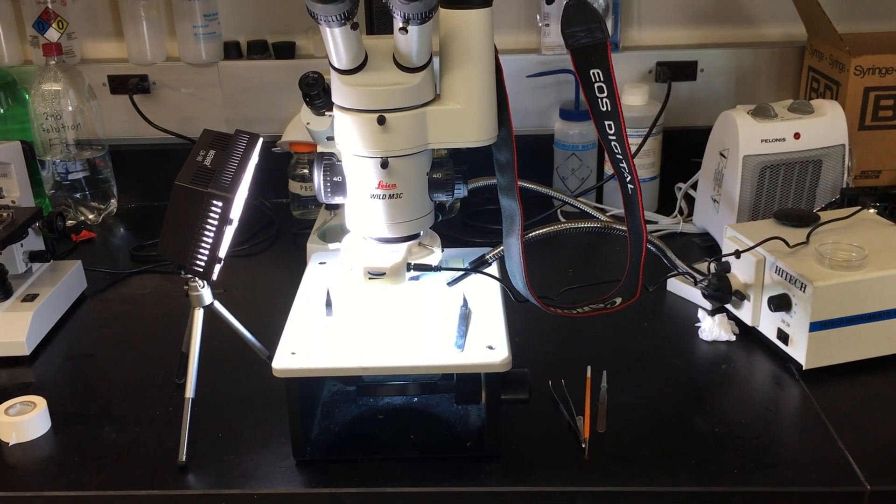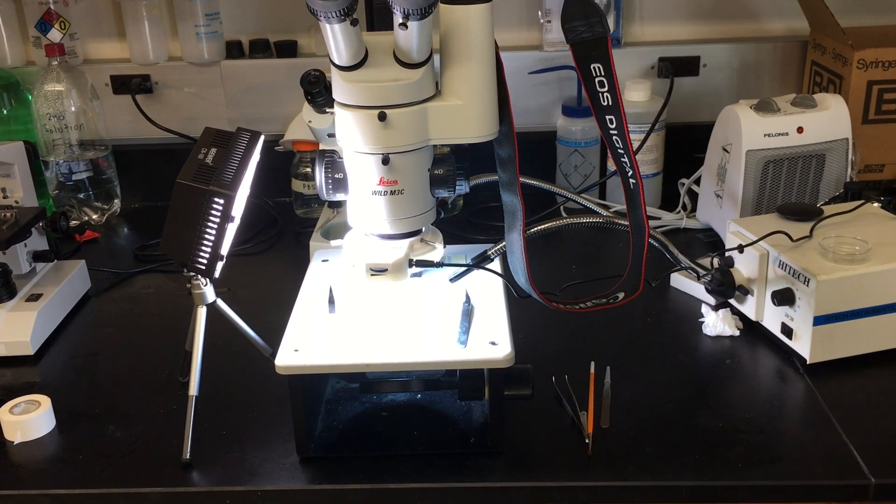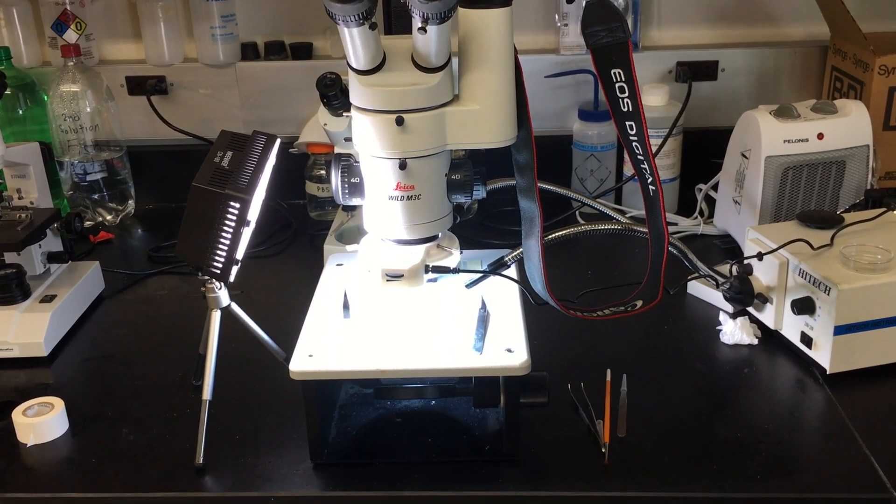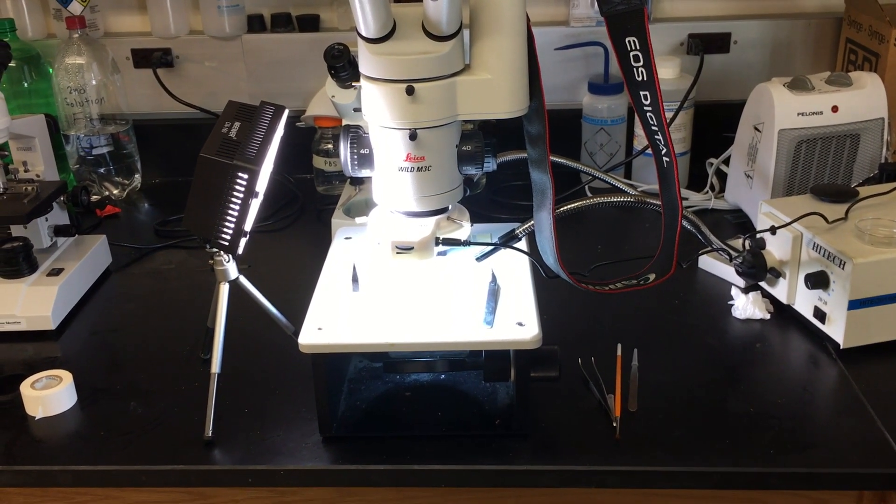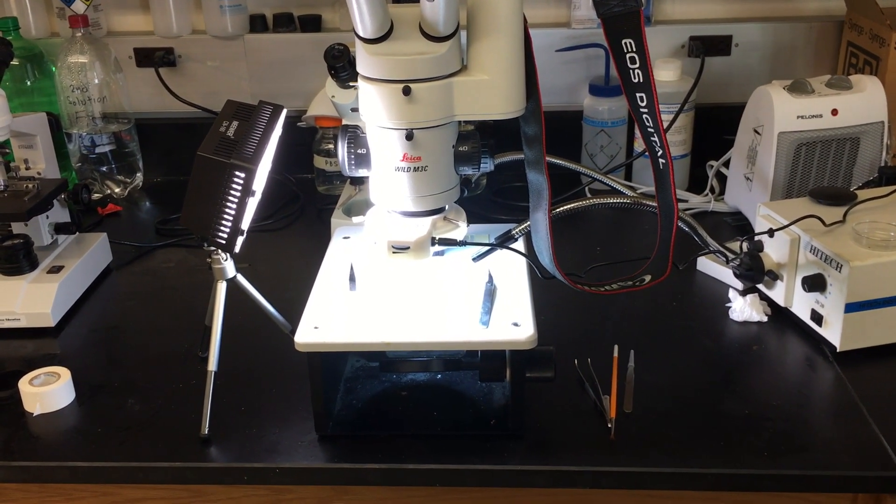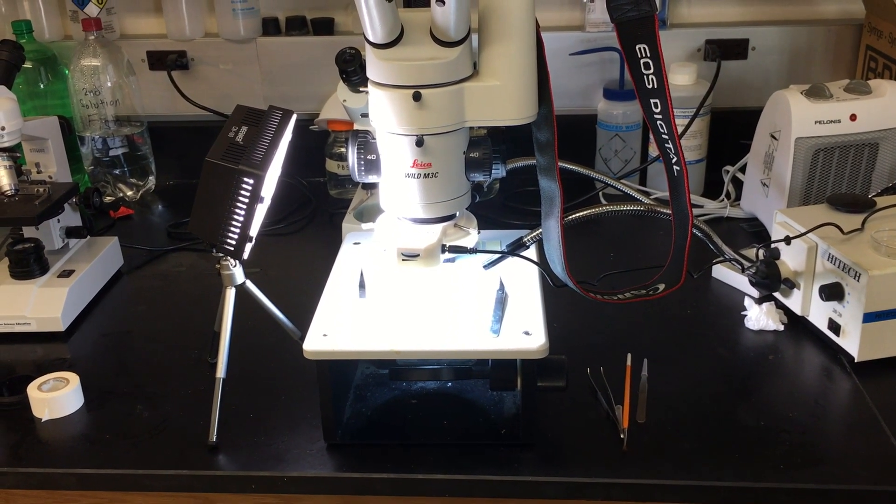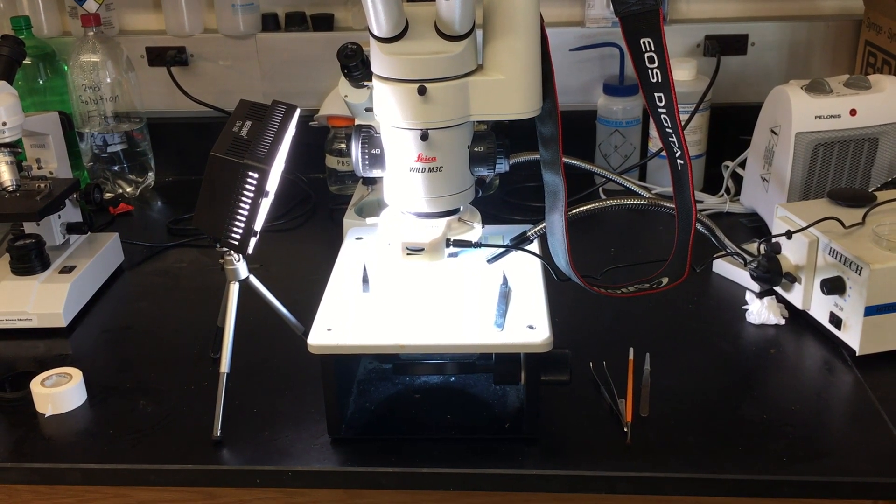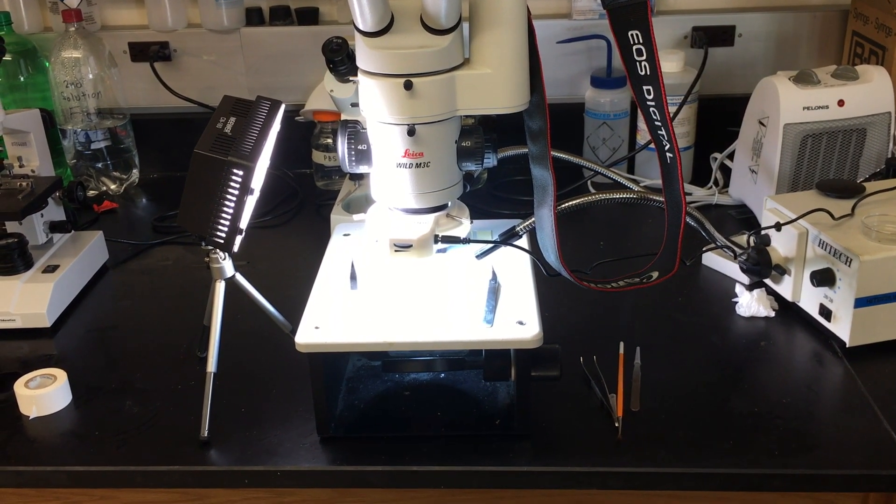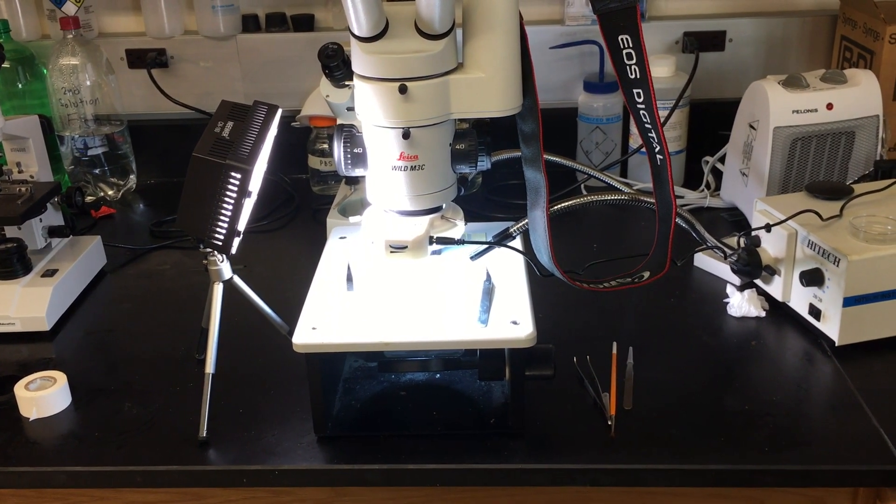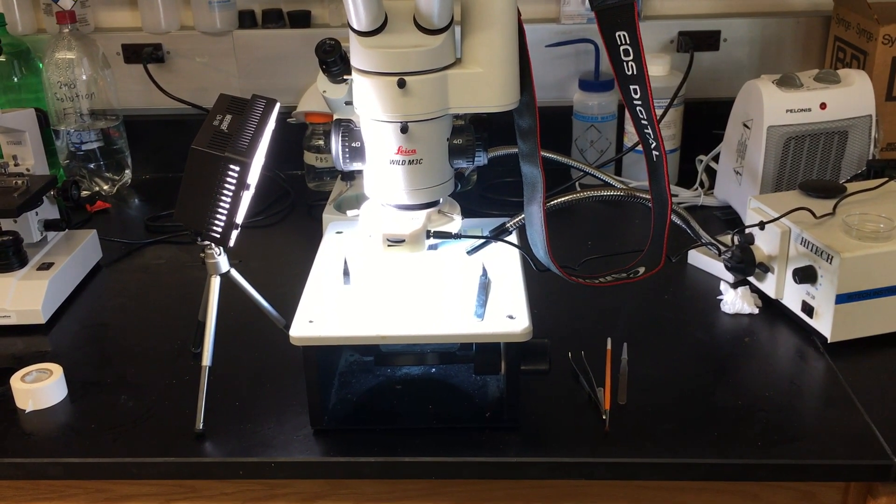This is my VILD M3C dissecting scope, and it's pretty much stock. The only things different are this Amscope ring light attached to the optics, and off to the left there's a bank of LEDs that I use for illumination. I can also use the fiber optic gooseneck to the right, but lately I've been finding these LEDs are just as bright and in many ways a lot better, although you don't get the fine focus of the illumination.